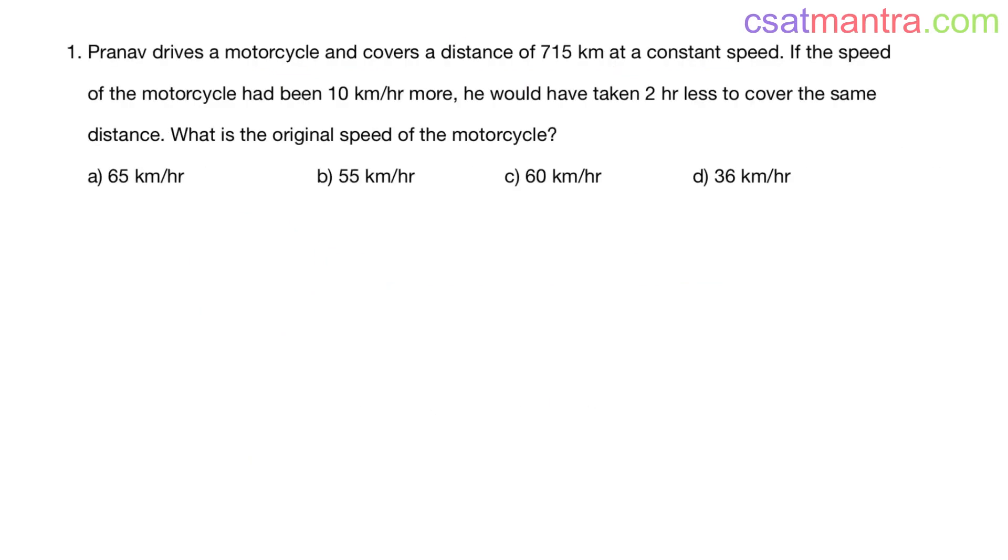Pranav drives a motorcycle and covers a distance of 715 km at a constant speed. If the speed of the motorcycle had been 10 km per hour more, he would have taken 2 hours less to cover the same distance. What is the original speed of the motorcycle?